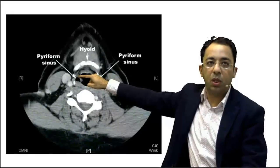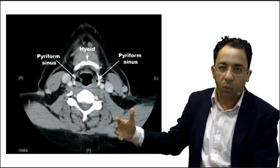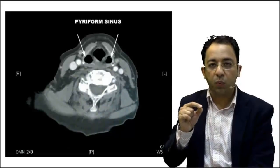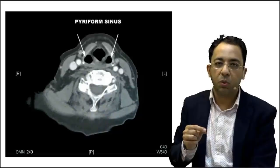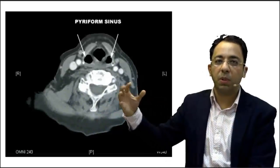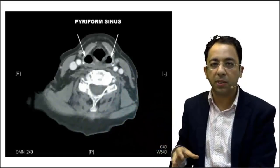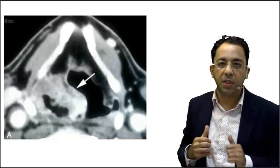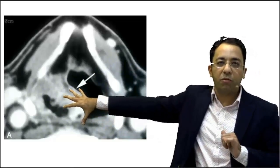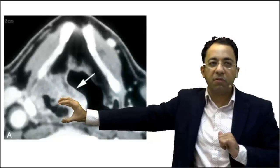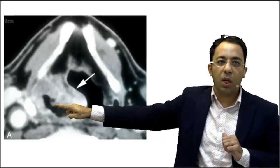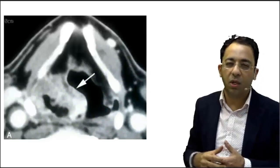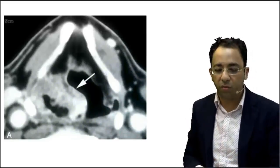Anterior to the piriform sinus, beneath the mucosa, runs the internal laryngeal nerve — this is key applied anatomy to keep in mind when reading radiological images. This area is also very important when evaluating malignancy. Patients often present with lymph node enlargement, and if pathology reveals squamous cell carcinoma, you must look for an occult primary. On CT, you may find a mass in the piriform sinus region — seen here as asymmetric thickening and obliteration of the piriform sinus with irregular margins, consistent with a neoplasm rather than inflammatory change.